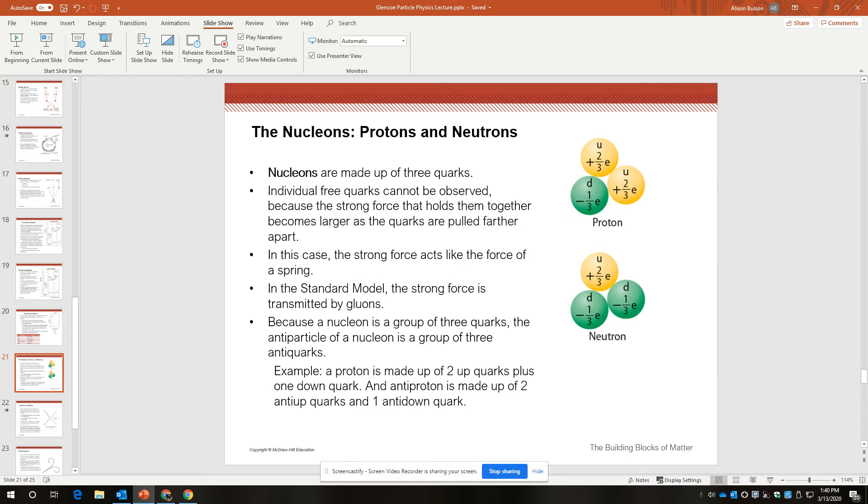And so the antiproton ends up with a negative one unit of charge, whereas the proton has a positive one unit of charge. And many antiprotons have been created at CERN in the antimatter factory.